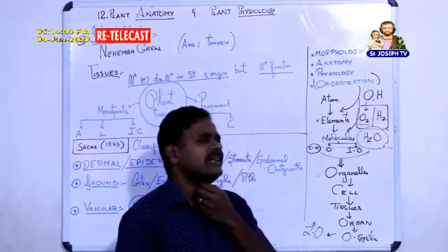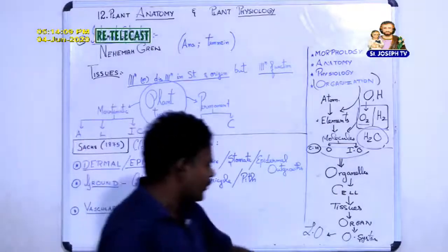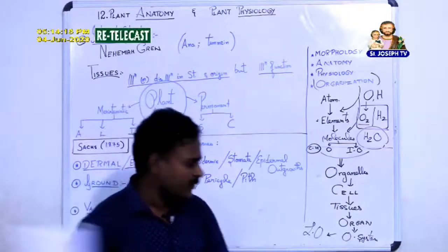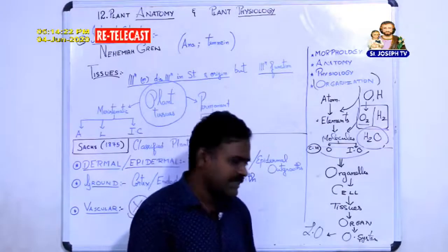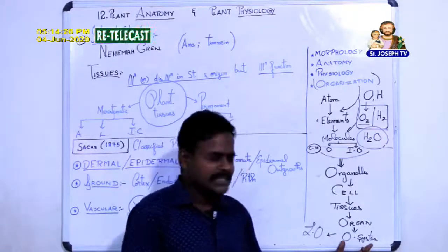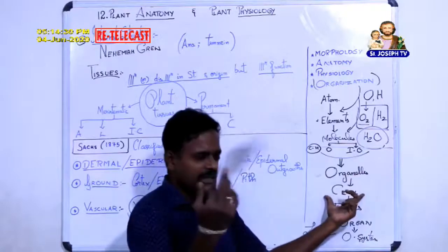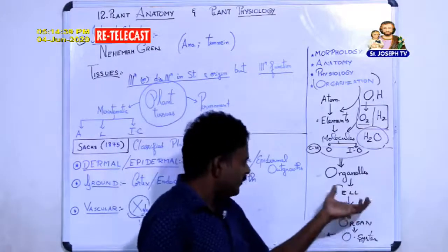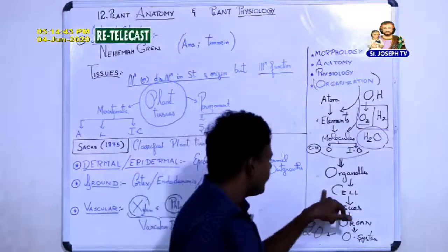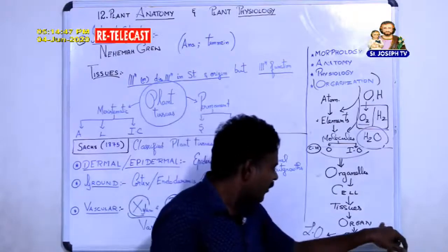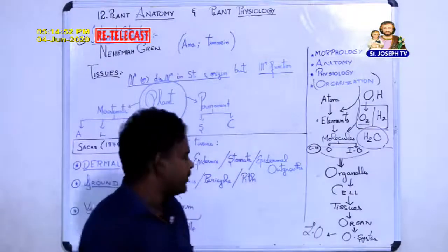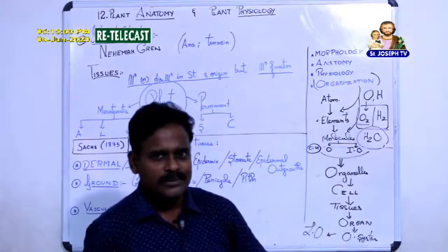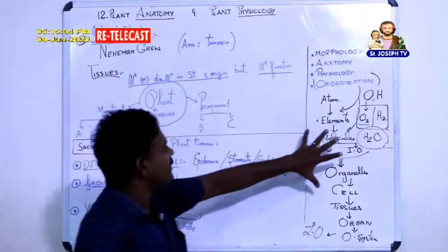So organ systems together form a living organism. Group of organelles form a cell; group of cells form tissues; group of tissues form organs; organs form organ systems; and all organ systems together make one living organism. Furthermore, groups of living organisms form a community, and groups of communities form a biosphere. I mentioned this because you are going to learn about tissues.